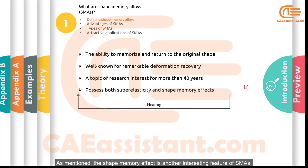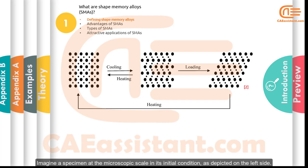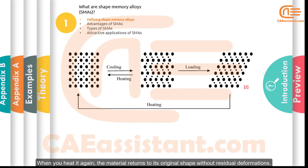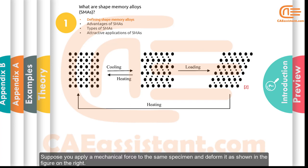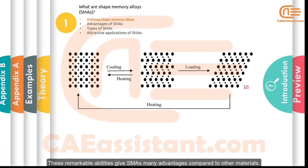The shape memory effect is another interesting feature of SMAs. Imagine a specimen at the microscopic scale in its initial condition. When you cool it, it takes on a deformed shape. When you heat it again, the material returns to its original shape without residual deformations. Furthermore, if you apply a mechanical force and deform the specimen, you can simply heat it and it will return to its original shape.